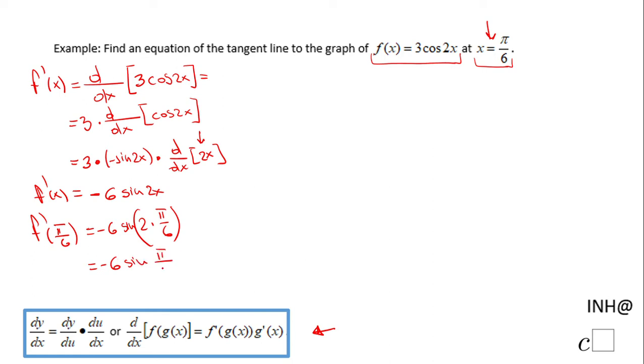Now we need to find the sine of π/3, which is nothing else than 60 degrees, and sine of 60 degrees is the square root of 3 over 2. So, the final answer for f'(π/6) will be negative 3√3.